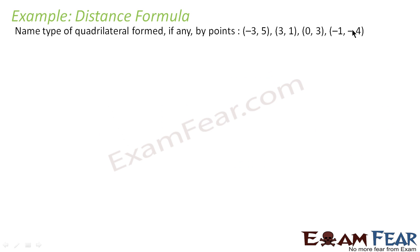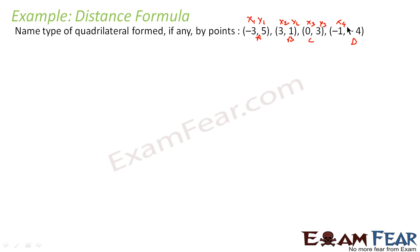Let's take one more example. We have four points. Let this point be A, B, C and D, and let this be x1, y1, x2, y2, x3, y3, x4 and y4. And let this be any quadrilateral ABCD.